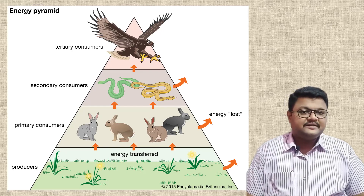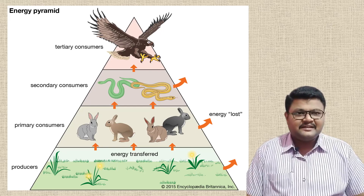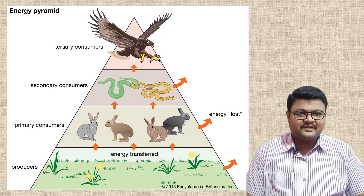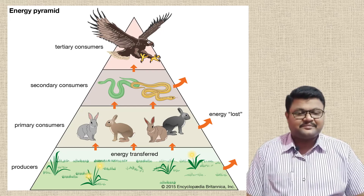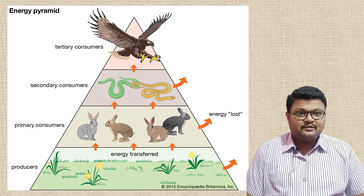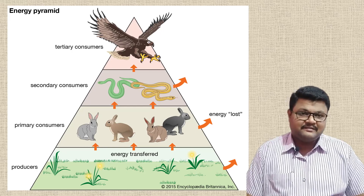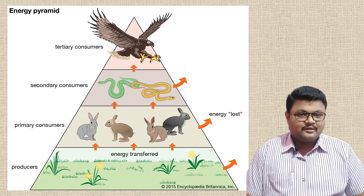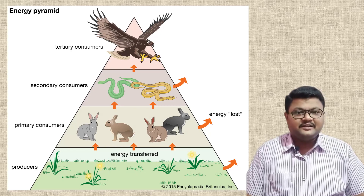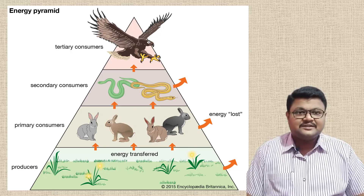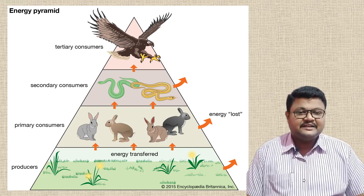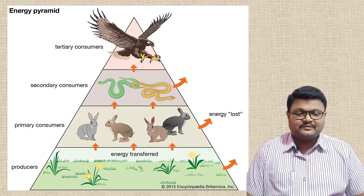From the diagram, you can observe there is an eagle or hawk. This eagle can eat snakes and can eat rabbits. We will consider the example where they eat snakes. They are also heterotrophs and depend on other organisms for growth and development — they cannot produce their own food. Those organisms that feed on secondary consumers are called tertiary consumers. These organisms have greater energy potential than secondary consumers.